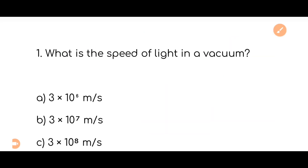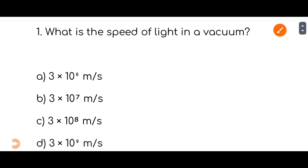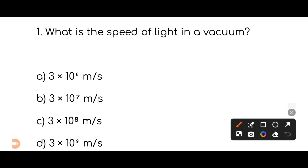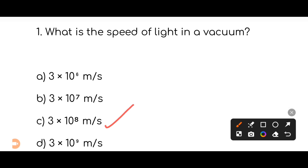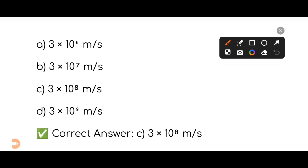What is the speed of light in vacuum? Let's see the options. The correct option is option number C — 3 into 10 to the power 8 meters per second. Option C is the correct answer: 3 × 10⁸ meters per second.